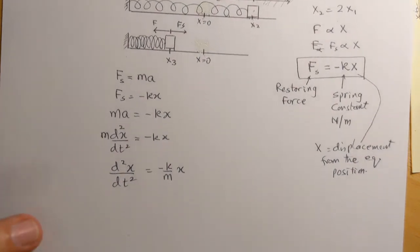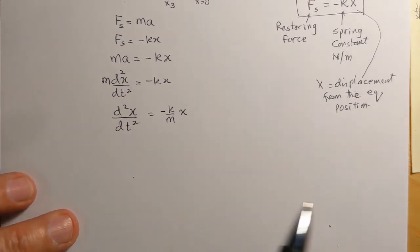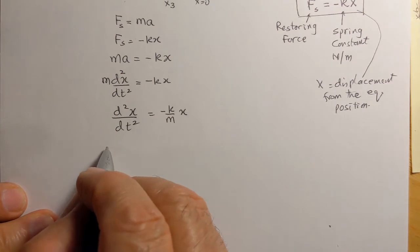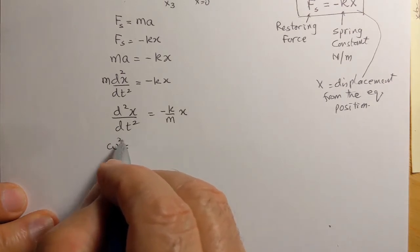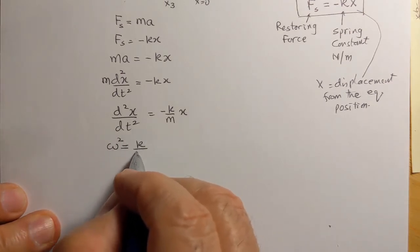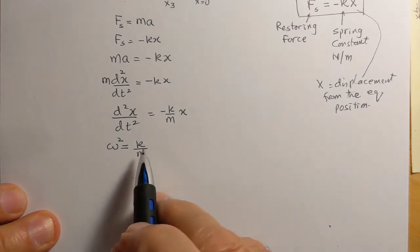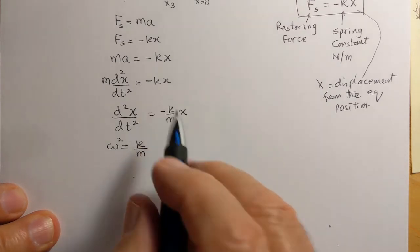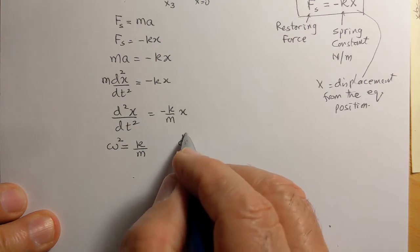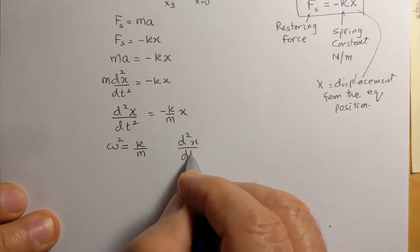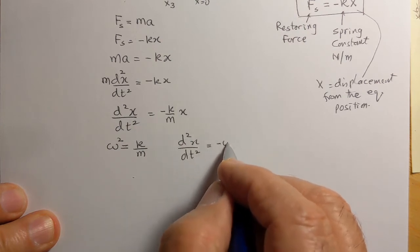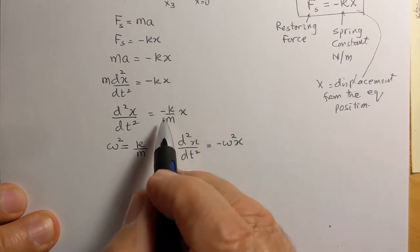of time. Now to solve this equation, we make a substitution that ω² equals k/m. With this substitution, the equation becomes d²x/dt² equals -ω²x, so